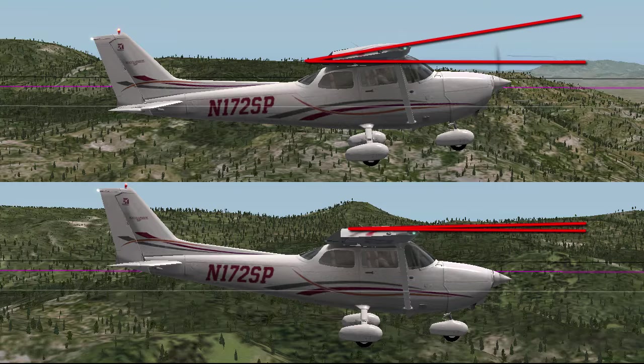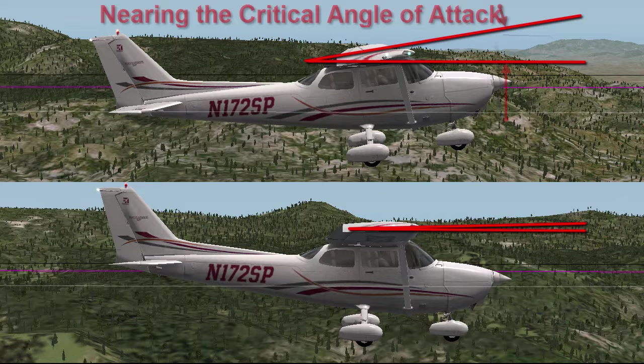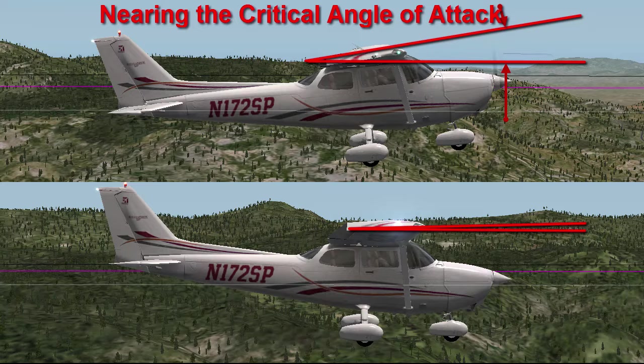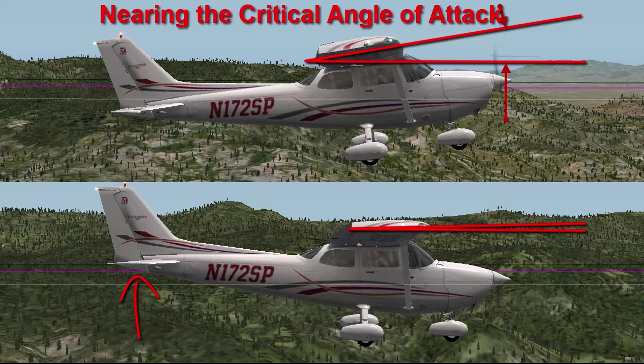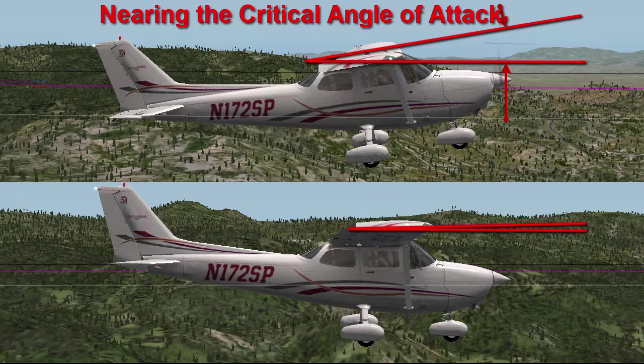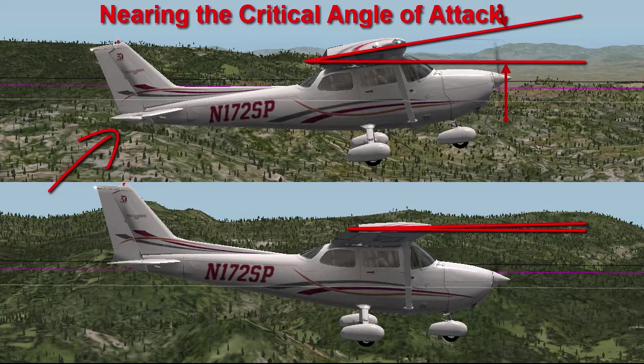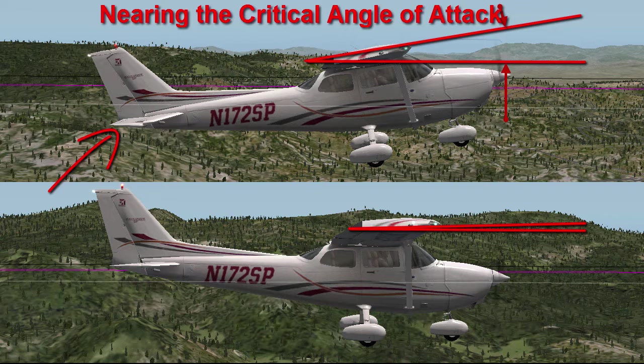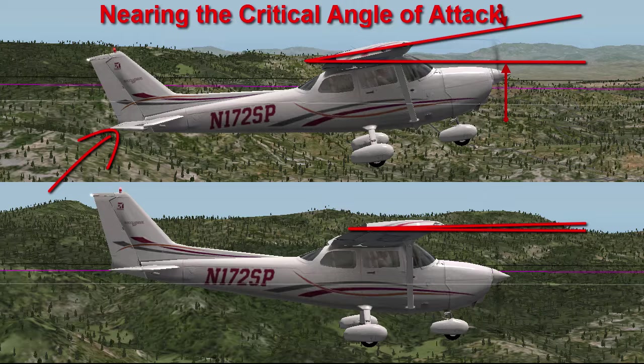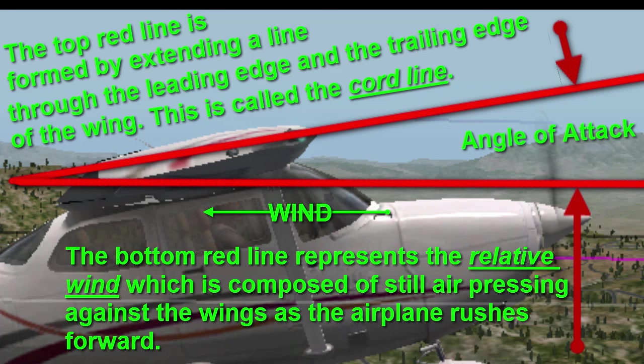There is one predictor of stall that never changes no matter how much you bank your wings, and that is angle of attack. Your wings will always stall at the same critical angle of attack no matter how much they are banked. When the pilot holds the control yoke forward, the plane flies fast at a small angle of attack — no danger of stall. When the pilot pulls the control yoke back, the airplane flies slowly at a large angle of attack and is in danger of stall. If you understand angle of attack, you will be well prepared to avoid stall and spin accidents in turning flight as well as straight wings-level flight.